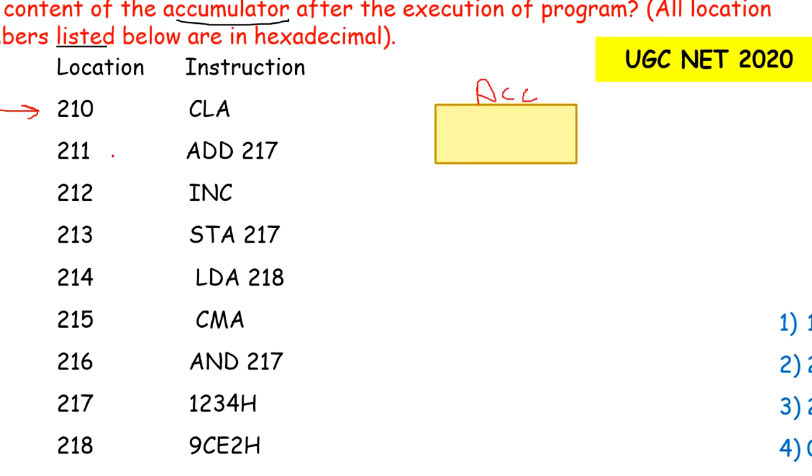Next instruction is ADD 217. We have to add content of location 217. At 217 we have 1234H content given. So in the accumulator we get 1234. Next instruction is INC. INC means increment the content of accumulator by 1. So 1234 plus 1 gives us 1235.